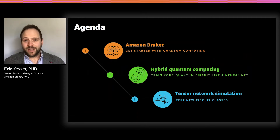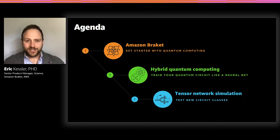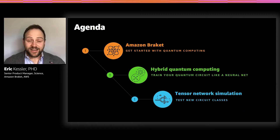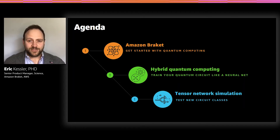Before we dive in, let me briefly walk you through what you can expect from the next 30 minutes. First, I'll give you an overview of Amazon Braket and how it has enabled customers to get started with quantum computing since we went GA. Then we will dive into the topic of hybrid quantum computing, and we will see how we can learn from the field of machine learning to build more effective quantum algorithms on Amazon Braket. And finally, I'm going to discuss how you can accelerate your quantum algorithms research using the new fully managed tensor network simulator TN1 on Amazon Braket.